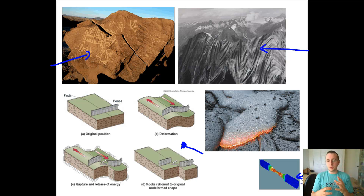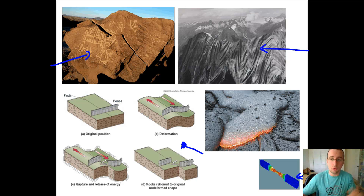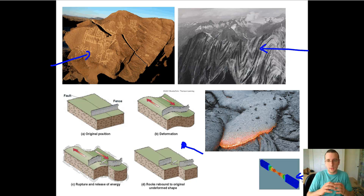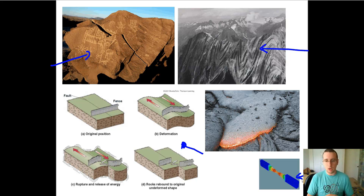Rocks also have a certain degree of viscosity — how 'flowy' the rock actually is. Think about lava, for example: what you're seeing is flowing rock. Rocks can have different degrees of viscosity. You also have something called viscoelasticity, which is the idea that rocks are both flowing and bending at the same time, and can return to their original shapes if allowed to do so.